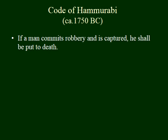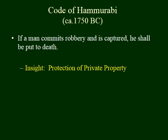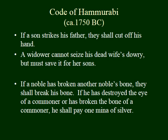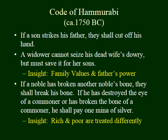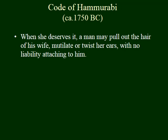I'd like to identify some of these laws because they help provide insight into what the Mesopotamians valued. Here's one: 'If a man commits robbery and is captured, he shall be put to death.' This tells us they valued protection of private property. Here are two others: 'If a son strikes his father, they shall cut off his hand.' 'A widower cannot seize his dead wife's dowry, but must save it for her sons.' This tells us they valued families. 'If a noble has broken another noble's bone, they shall break his bone. If he has broken the bone of a commoner, he shall pay one mina of silver.' Notice the rich and poor are treated differently.